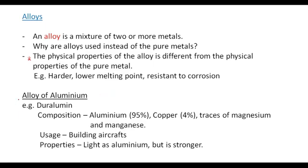Let's look at an alloy of aluminium — Duralumin. You need to be able to give some examples of alloys, including their composition, use, and properties. Duralumin is 95% aluminium, 4% copper, and traces of magnesium and manganese. We use this alloy to build aircraft. Its properties are that it is light as aluminium but stronger than aluminium.